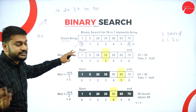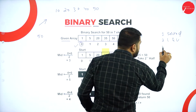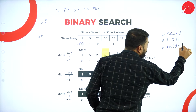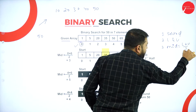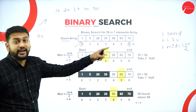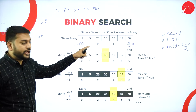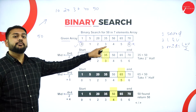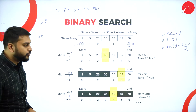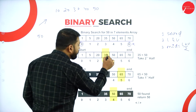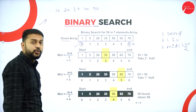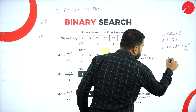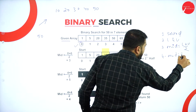The next thing to do is calculate the mid value. How do I calculate it? Lower bound plus upper bound divided by 2. So 0 plus 6 divided by 2 gives me 3 as the mid value. So mid = 3.